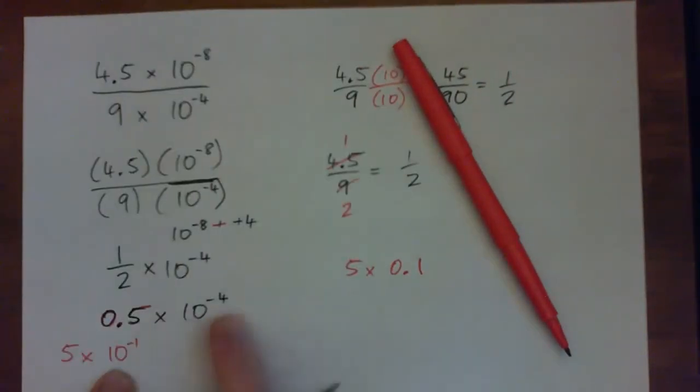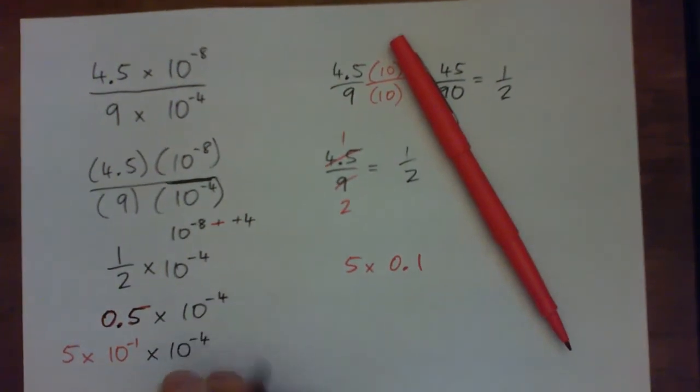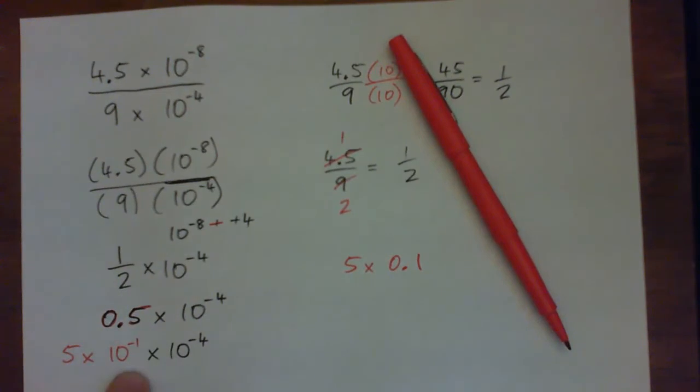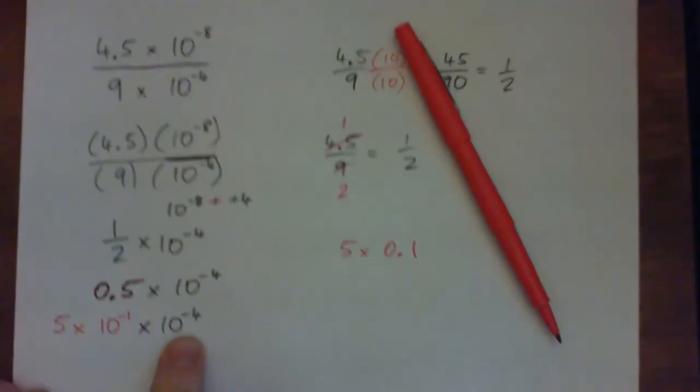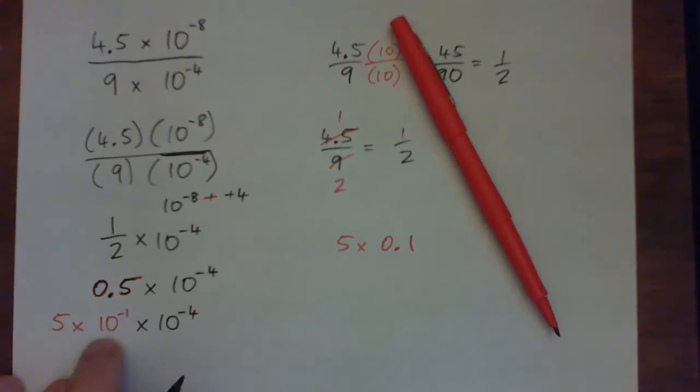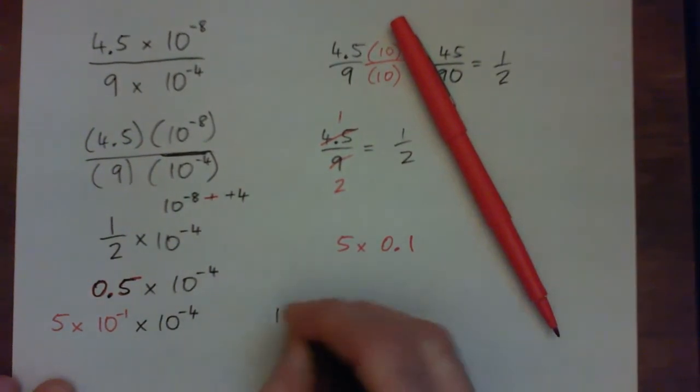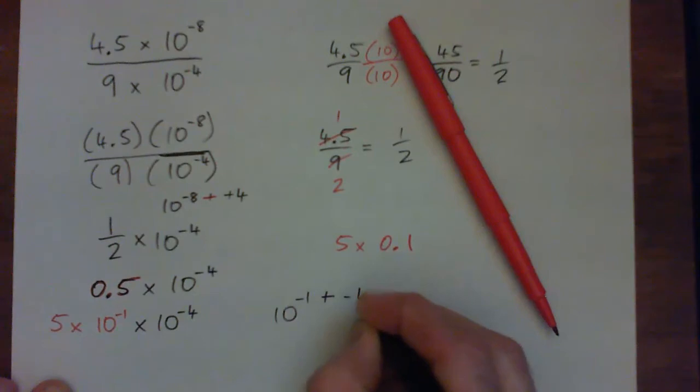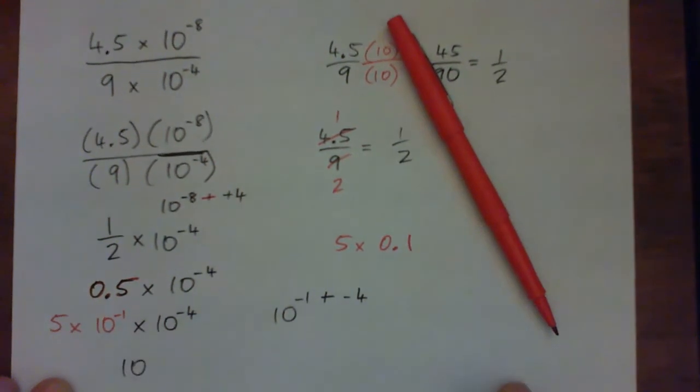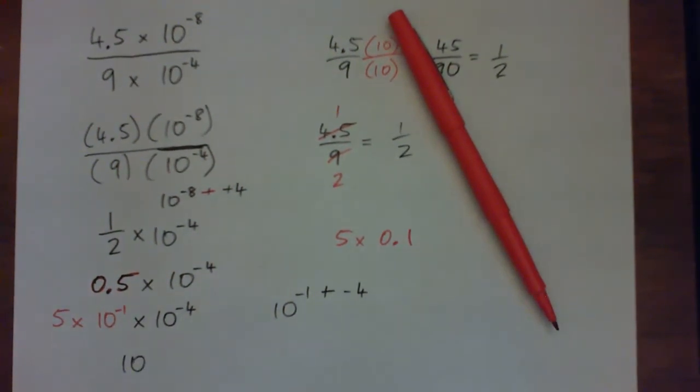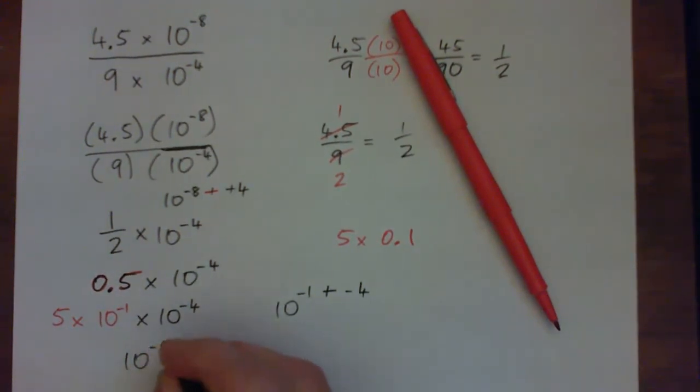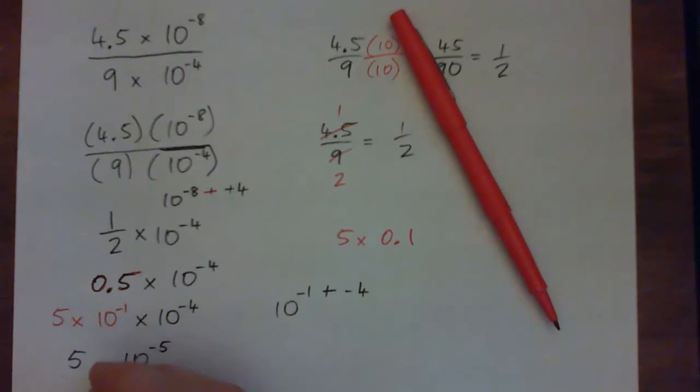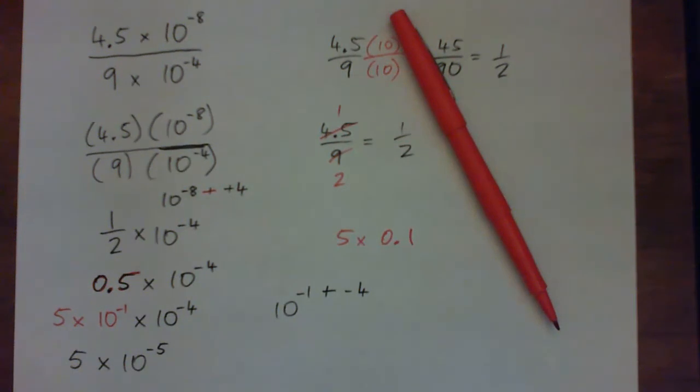But the whole number here includes the times 10 to the power of negative 4, doesn't it? So we end up with this thing, 5 times 10 to the negative 1 times 10 to the negative 4, right? And when I multiply these exponents, I need to add 10 to the negative 1 plus negative 4, which gives 10 to the power of what? What's negative 1 plus negative 4? That'd be negative 5, right? So we get 5 times 10 to the power of negative 5, or 5.0 times 10 to the negative 5, same thing.